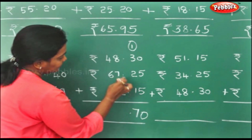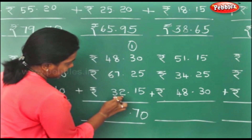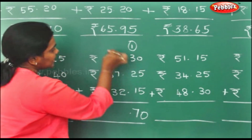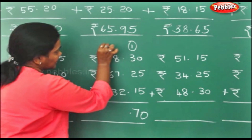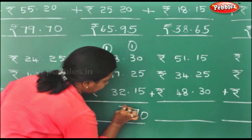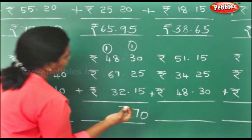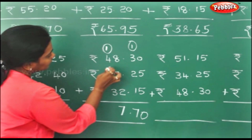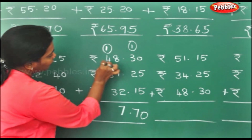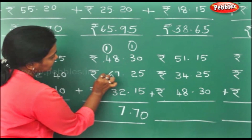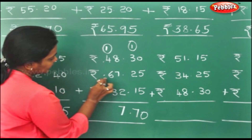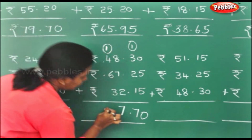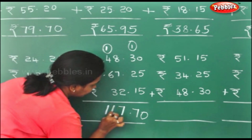7 plus 2 is 9. 9 plus 8 is 17. 4 plus 6 is 10. 10 plus 3 is 13. 13 add 1 will be 14.